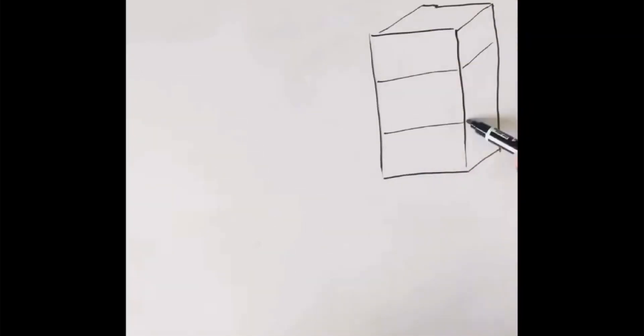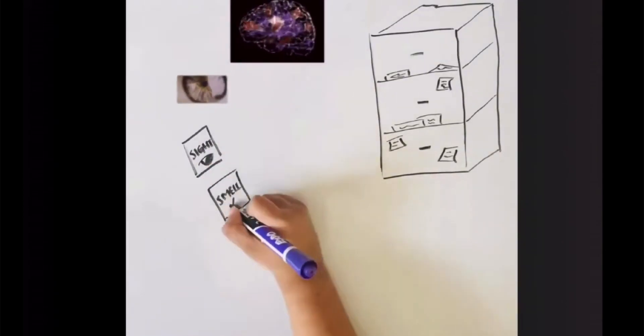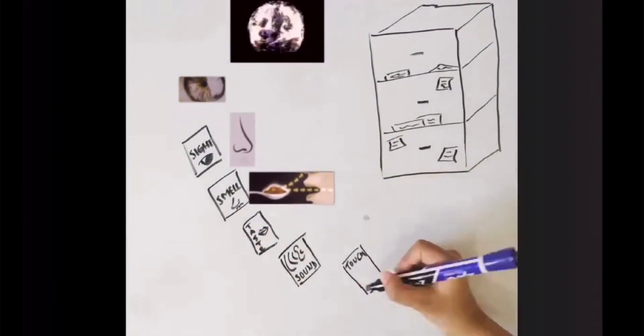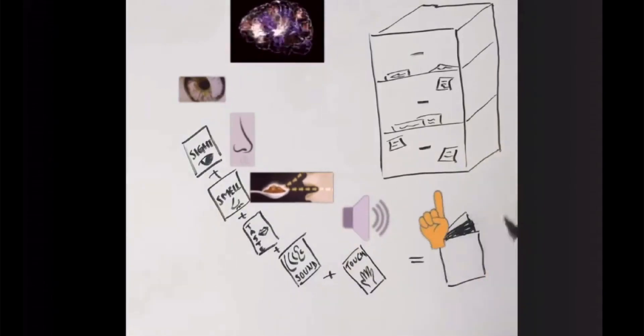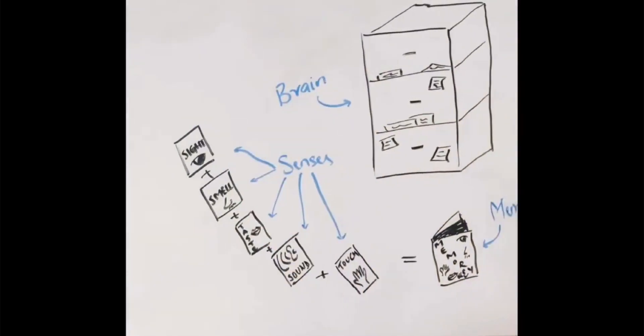But how do you actually have memories? A simple way to think about the process of memory is to think of your brain as a huge and messy filing cabinet. Your memories are folders, and each of the sensory inputs are files that go into those folders.